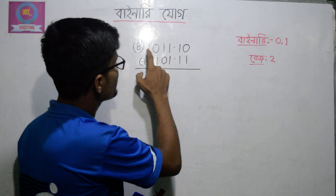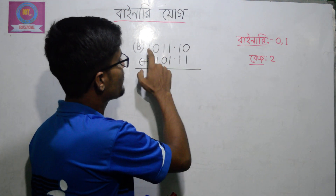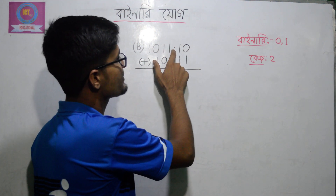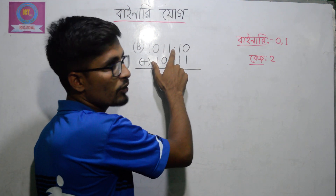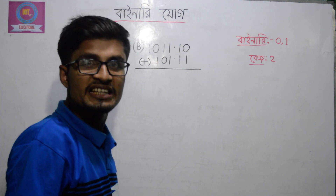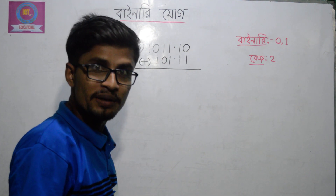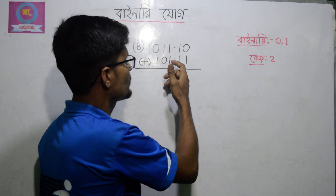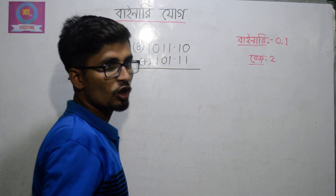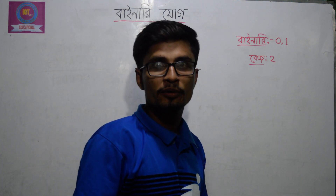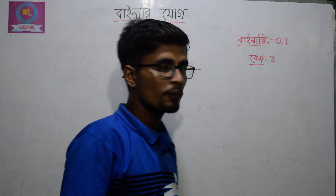We are going to have binary — mouse, corrective, and the numbers of binary. Here is the job sheet.